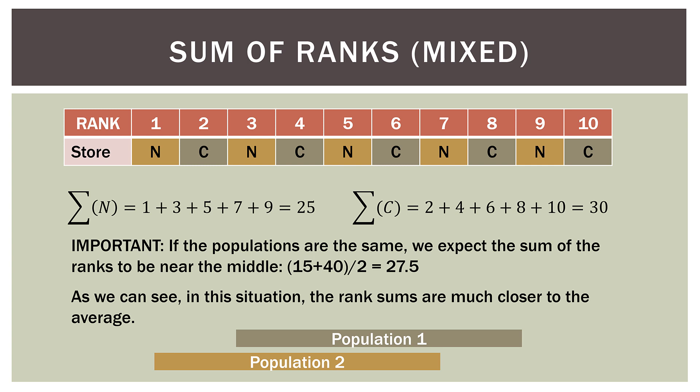Visually, the populations look like this: Natterman Point is slightly to the left because it begins with rank one, and Churchgate is slightly offset because it begins on rank two — therefore they overlap quite a bit. In this case, we would probably fail to reject the null hypothesis, which states that these two stores are the same and the median location is the same. Because they overlap so much, these probably come from the same population, and there is no meaningful difference between the rank sums.